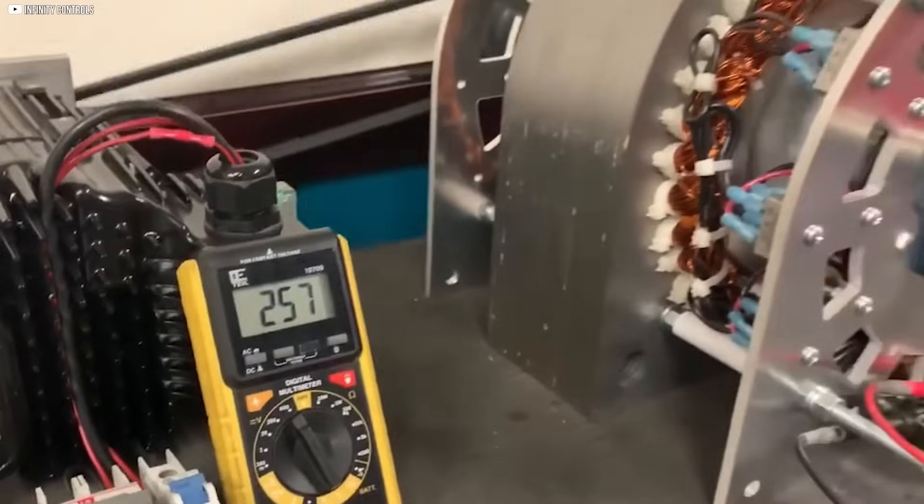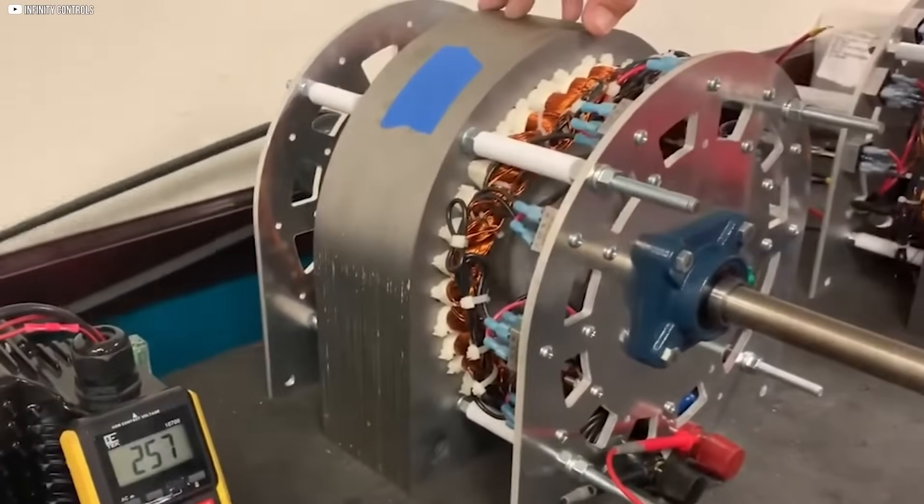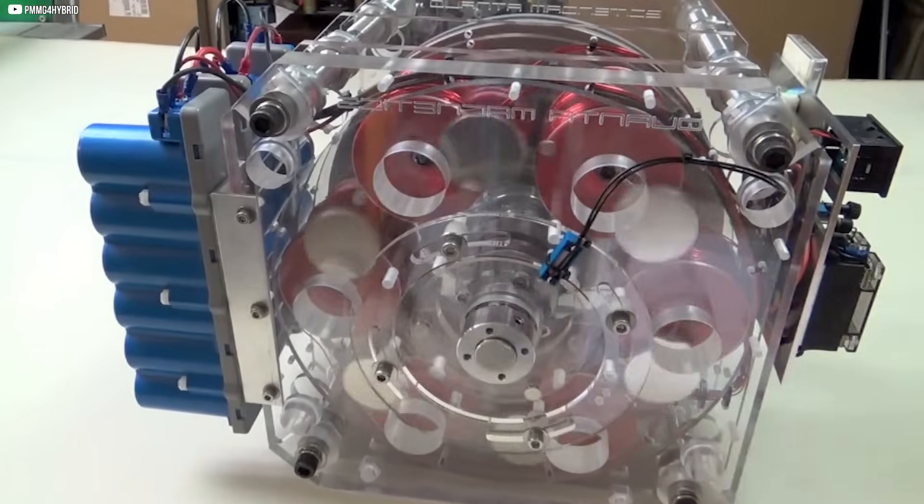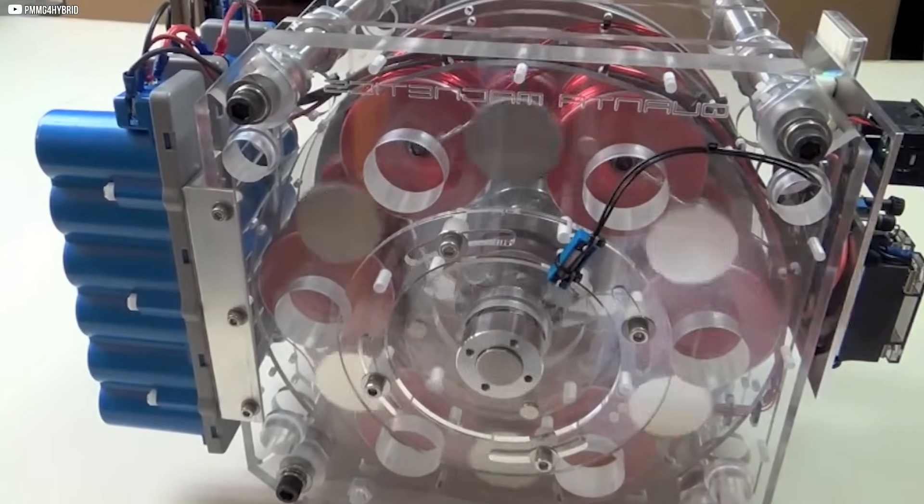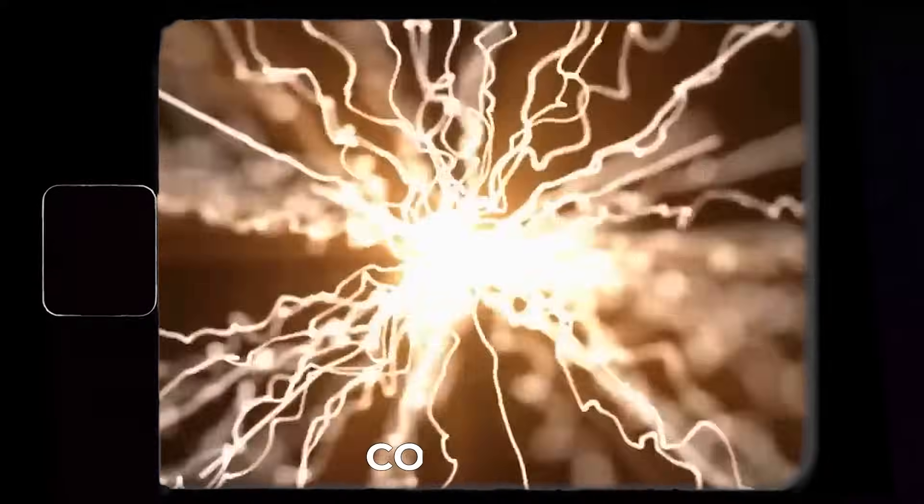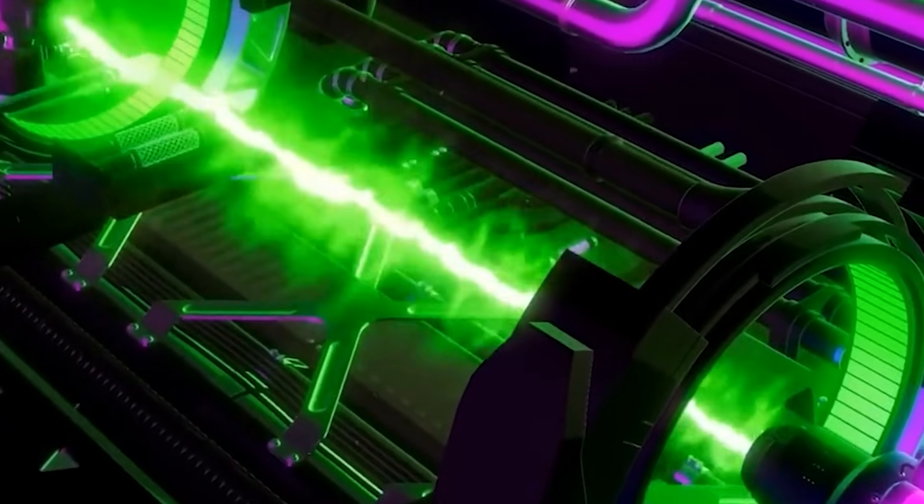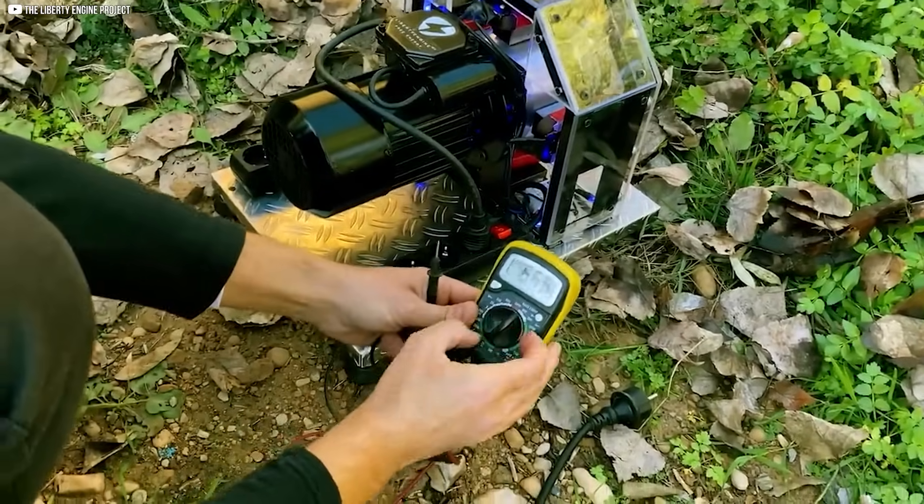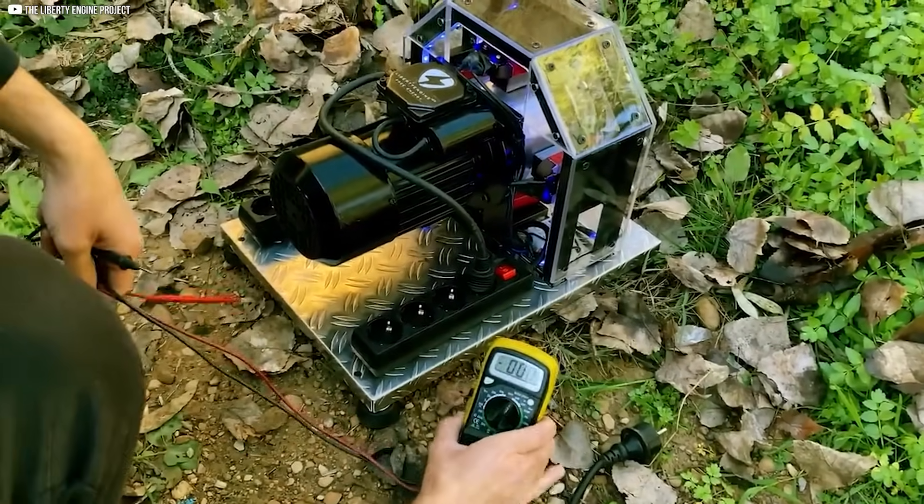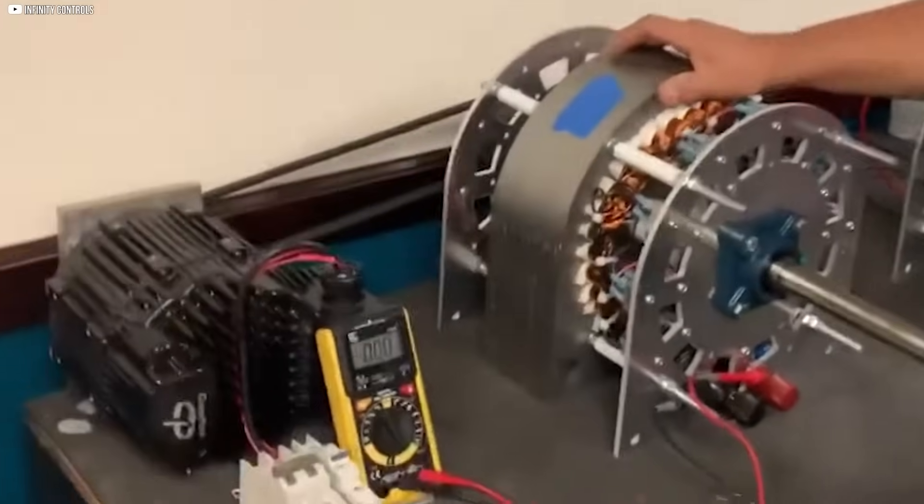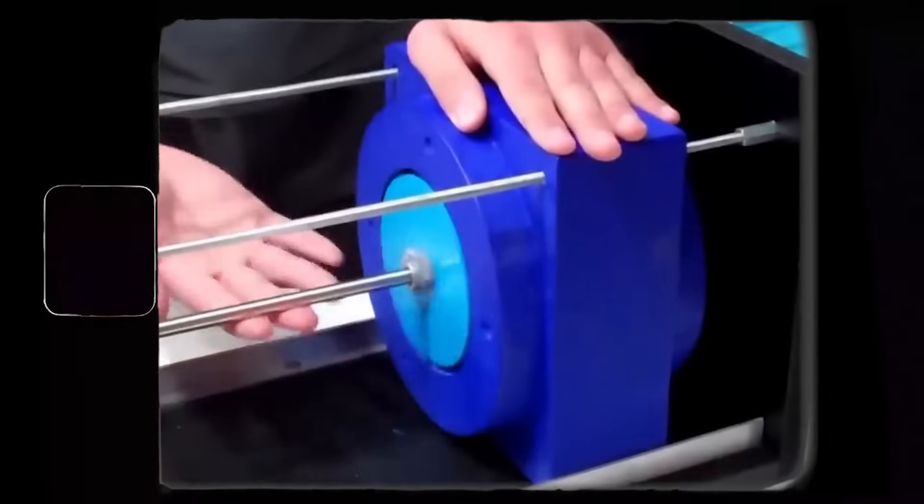The iGenerator's impressive performance isn't just due to its 9-phase design. It also features a breakthrough zero-cogging mechanism. In traditional generators, magnetic interactions between the rotor and stator create resistance known as cogging, which feels jerky and requires extra torque to overcome. That resistance means more input energy is needed just to get things moving. But with the iGenerator, that resistance is nearly eliminated.